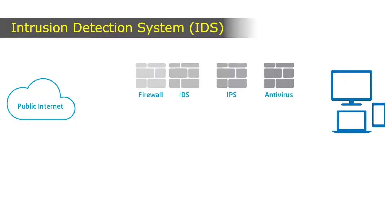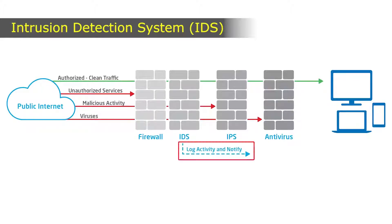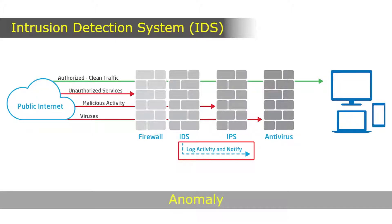Most of the intrusions happen from the outside network. So every organization must deploy an intrusion detection system to safeguard their networks, databases, computing systems and other devices. An intrusion detection system monitors network traffic for suspicious activities and issues alerts if any such activity is discovered. This is known as anomaly. Anomaly detection and reporting are the main functions of IDS.